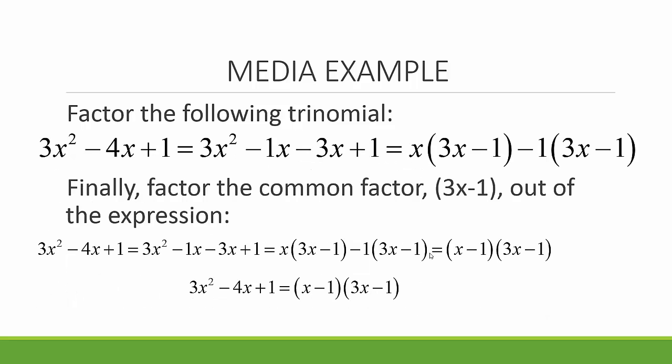Finally, factor the common factor 3x minus 1 out of the expression. So we have x times 3x minus 1 minus 1 times 3x minus 1. In total, we have 3x squared minus 4x plus 1 equals x minus 1 times 3x minus 1.